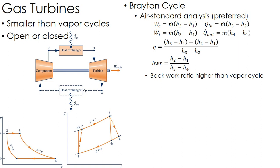A compressor has to work a lot harder in comparison to the turbine than in that vapor power cycle, so this back work ratio is going to be much higher. There's a bit of a trade-off with that, of course. We've got a much smaller system here, so there's always trade-offs with things.